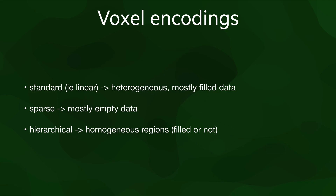Let's summarize the three encodings we have seen in this lesson. There is the standard linear encoding, which stores all the values of all the voxels as a single sequence, and is good for datasets that are mostly full and filled with different values. There are sparse encodings, which store only the voxels that have values, and work well when a grid is mostly empty. And there are hierarchical encodings, which aggregate regions of voxels into nodes in a tree, and work best when there are large regions with the same value, which can be empty space.